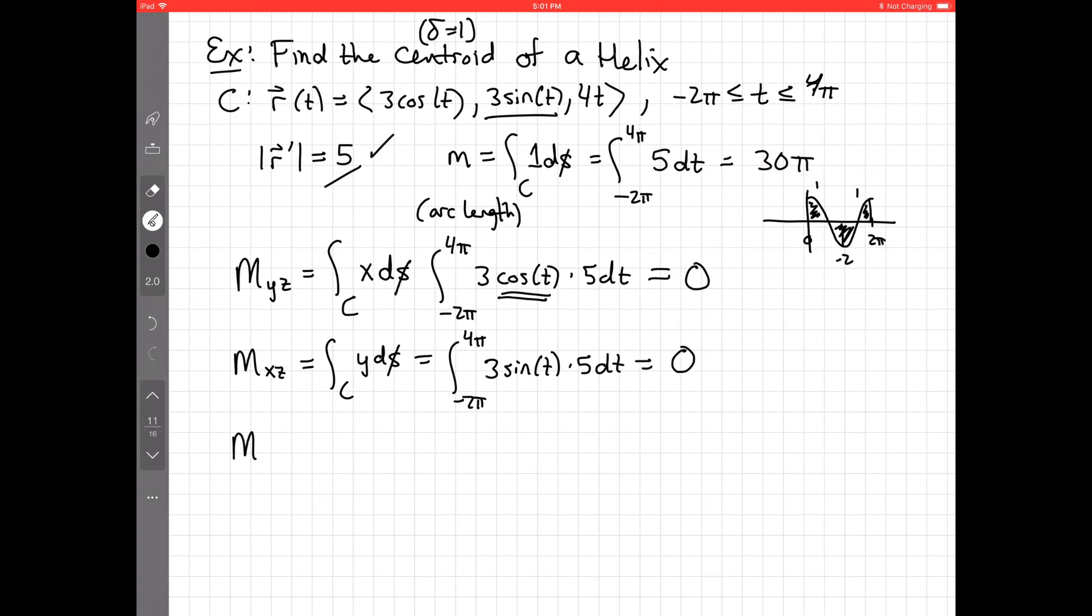Finally, the moment about the xy plane. We have z ds. This one is more interesting. We have the integral from negative 2 pi to 4 pi. And z is 4t. ds is 5 dt. So, we have the integral from negative 2 pi to 4 pi of 20t dt. Well, that's 10t squared evaluated at 4 pi and negative 2 pi, right? The integral of t is 1 half t squared. So, plugging that in, we get 160 pi squared minus 40 pi squared. And so, this moment comes out to be 120 pi squared.